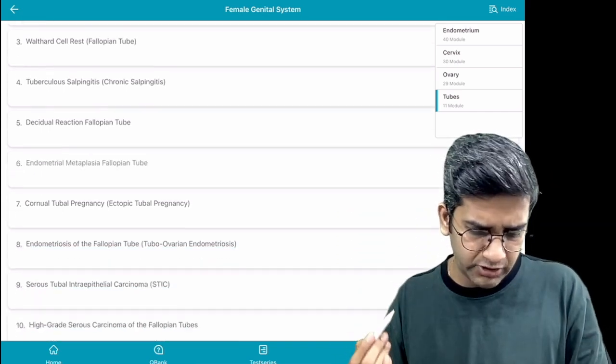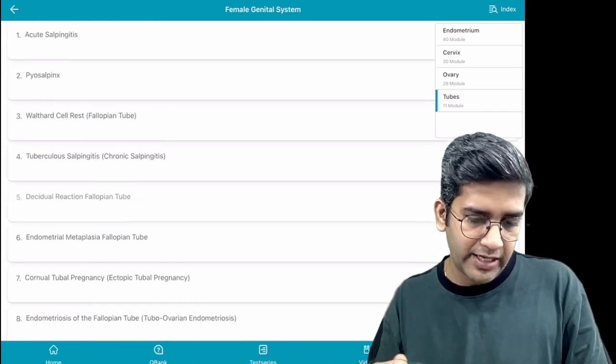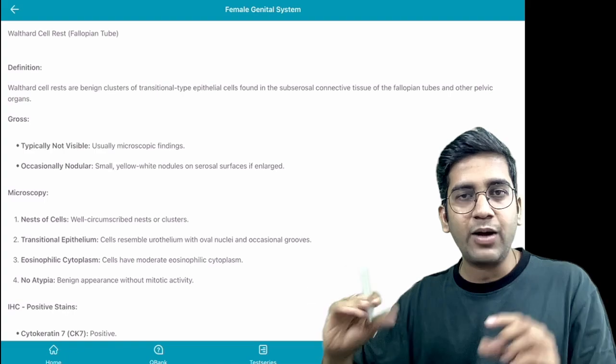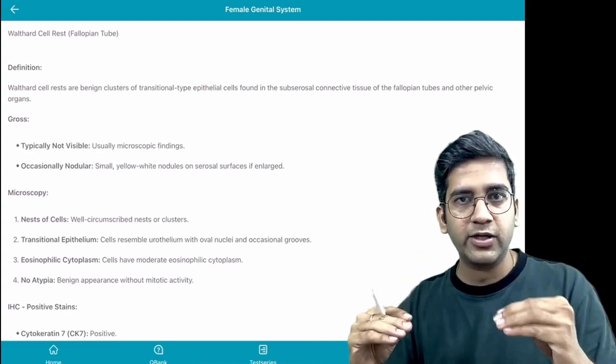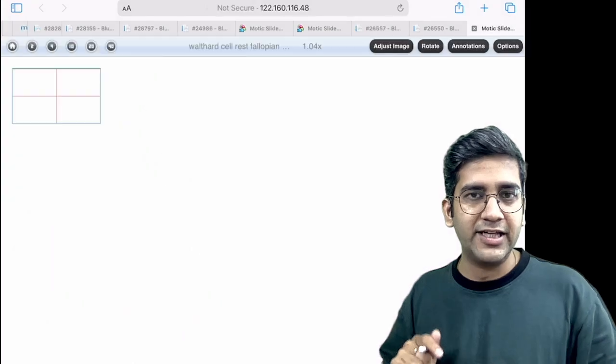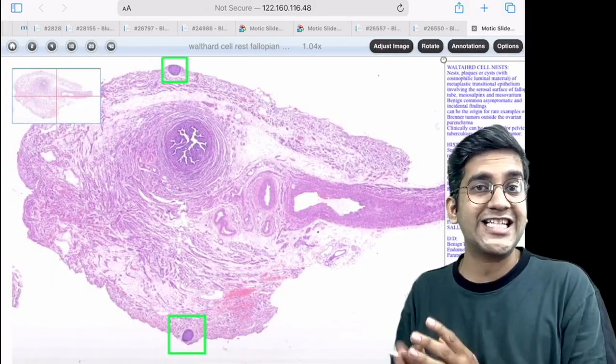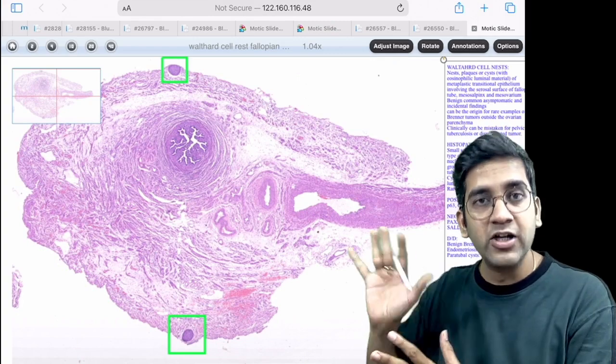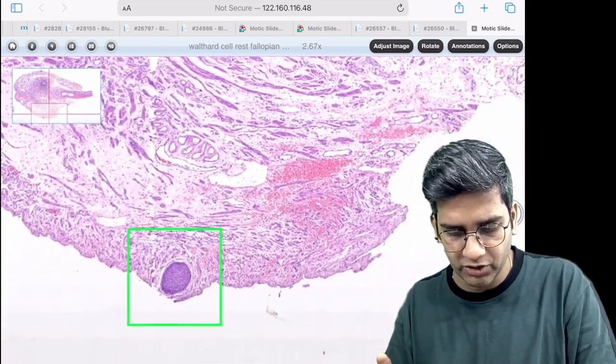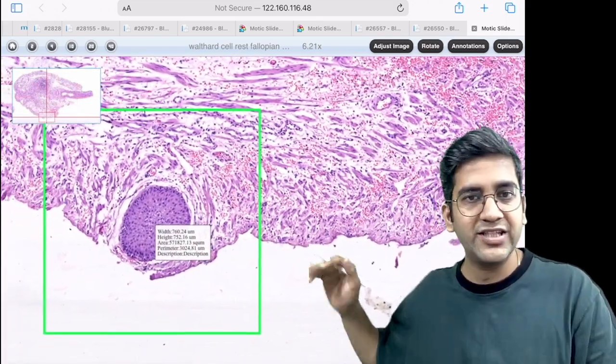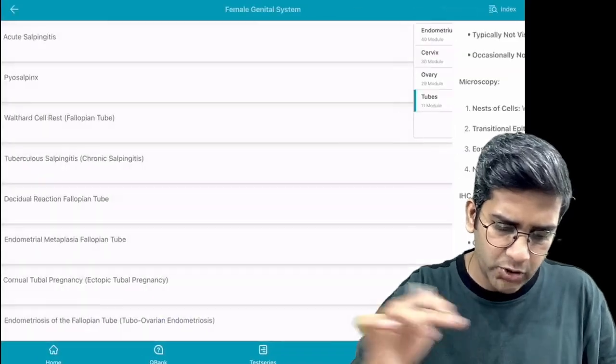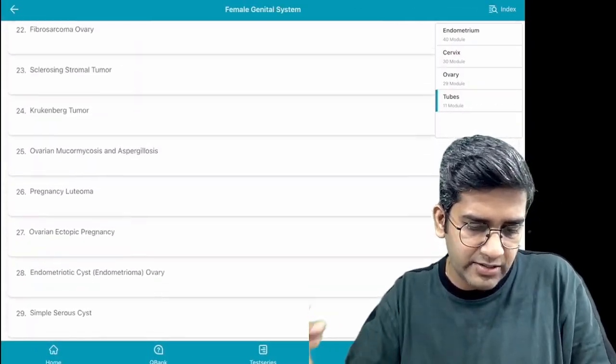Let's say I want to look at tubal pathology. I'm a first-year student and want to know what is walthard cell rest. I click on walthard cell rest and you'll have the definition, microscopic gross, whether IHC is required, and then a slide. You click on the slide and it opens. The beauty of this is it's a self-learning tool. If you're in the middle of the night with no one to guide you, go for RXDX Pathology.